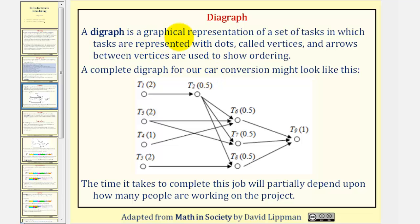A digraph is a graphical representation of a set of tasks in which the tasks are represented by dots called vertices, and the arrows between vertices are used to show ordering. A complete digraph for our car conversion might look something like this.